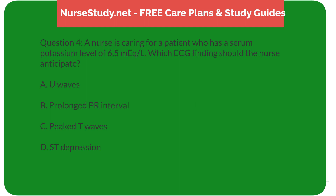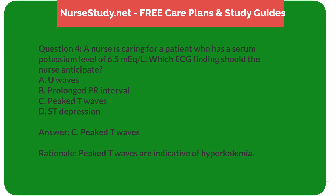Question 4: A nurse is caring for a patient who has a serum potassium level of 6.5 mEq/L. Which ECG finding should the nurse anticipate? A) U waves, B) Prolonged PR interval, C) Peaked T waves, D) ST depression. Answer: C, Peaked T waves. Rationale: Peaked T waves are indicative of hyperkalemia.